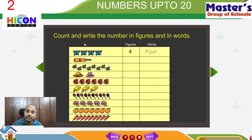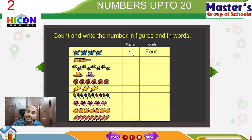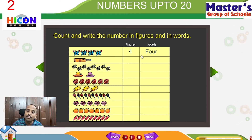This number is called 4. And the 4 can be written in words like this: F, O, U, R — four.